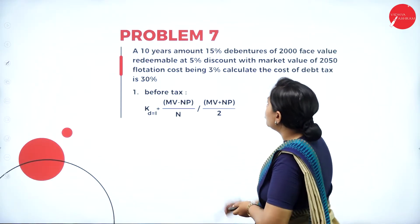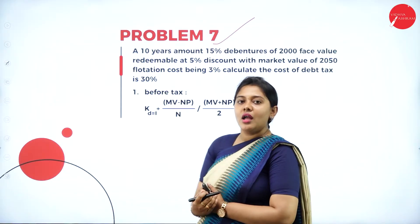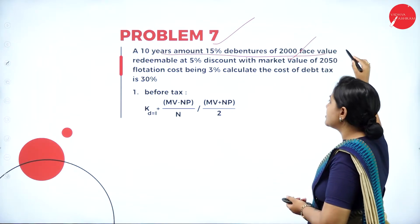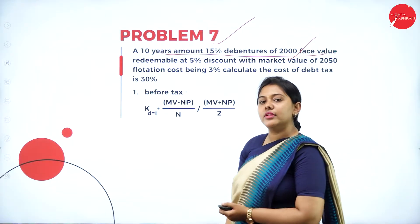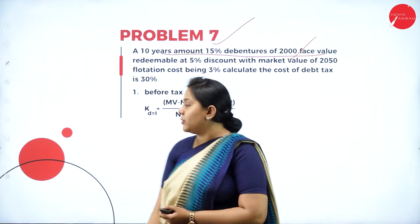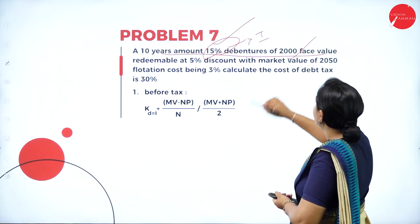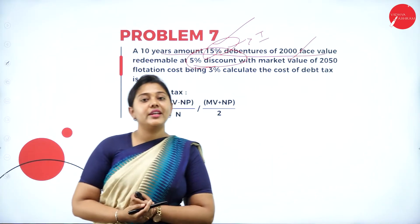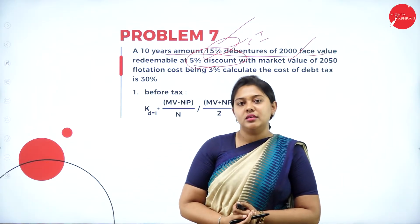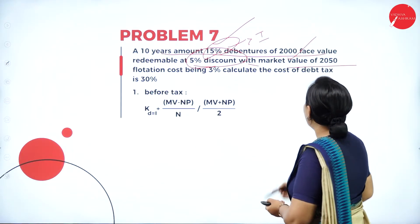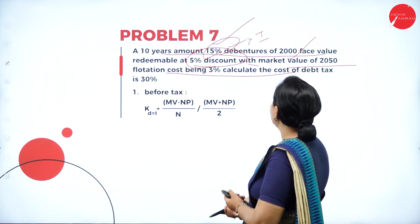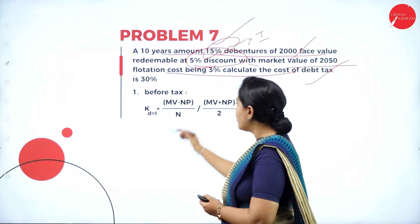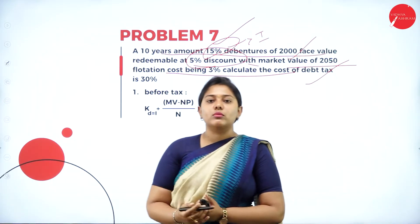Moving on to Problem 7. A 10-year, 15% debenture of rupees 2000 face value, redeemable at 5% discount — in the previous problem we discussed redemption at a premium; now it is at a discount. Market value is 2050, flotation cost is 3%. The tax rate is given at 30%, so this is an after-tax problem — we must first calculate before tax, then after tax.